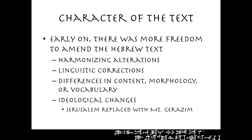Now, what is the general character of the text? Early on there was much more freedom on the part of the scribes to amend the Hebrew text. There was harmonizing, linguistic corrections, changes to the content, the morphology, and the vocabulary. They didn't change it substantially, but they did feel much more free than they did later to change the text, and there were ideological changes. For example, Jerusalem is often replaced with Mount Gerizim, which makes sense for the Samaritans.